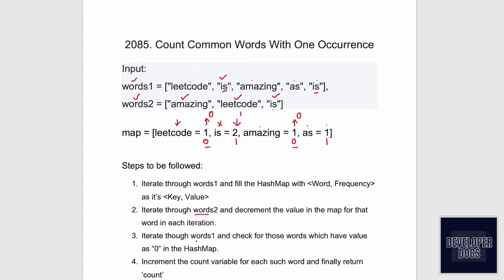To count the zeros, we iterate through the words one array. 'Leetcode' is the first word — its frequency in the map is zero, so we increment a count variable. 'Is' has value one so we don't increment. 'Amazing' has value zero so we increment count to two. 'As' contains one so we don't increment. The final answer is two, so we return two.